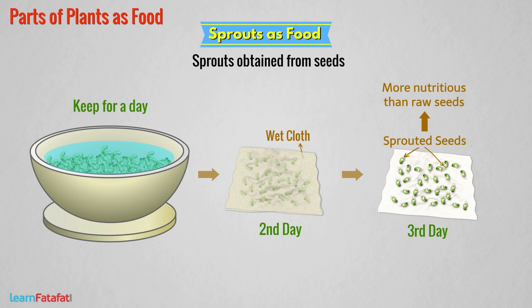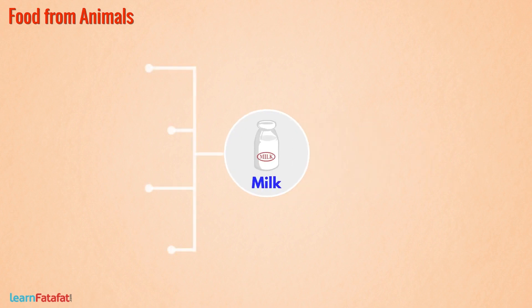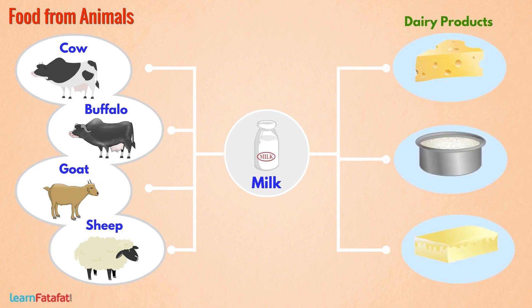Till now, we spoke about plant parts as food. Now we will understand how we obtain food from animals. We obtain milk from animals such as cow, buffalo, goat, sheep, etc. From milk, we prepare various dairy products such as cheese, curd, butter, etc.